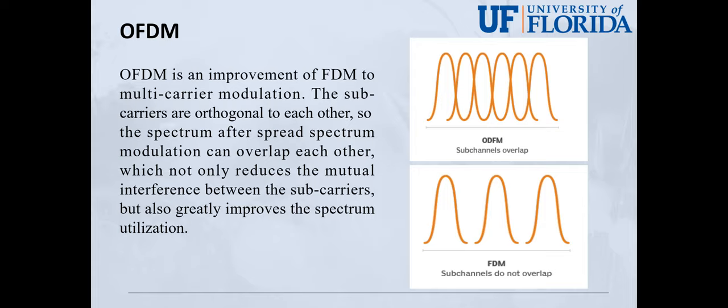OFDM is an improvement to multi-carrier modulation. The subcarriers are orthogonal to each other, so the spectrum after spread-spectrum modulation can overlap each other. It not only reduces the mutual interference between the subcarriers, but also greatly improves the spectrum utilization.